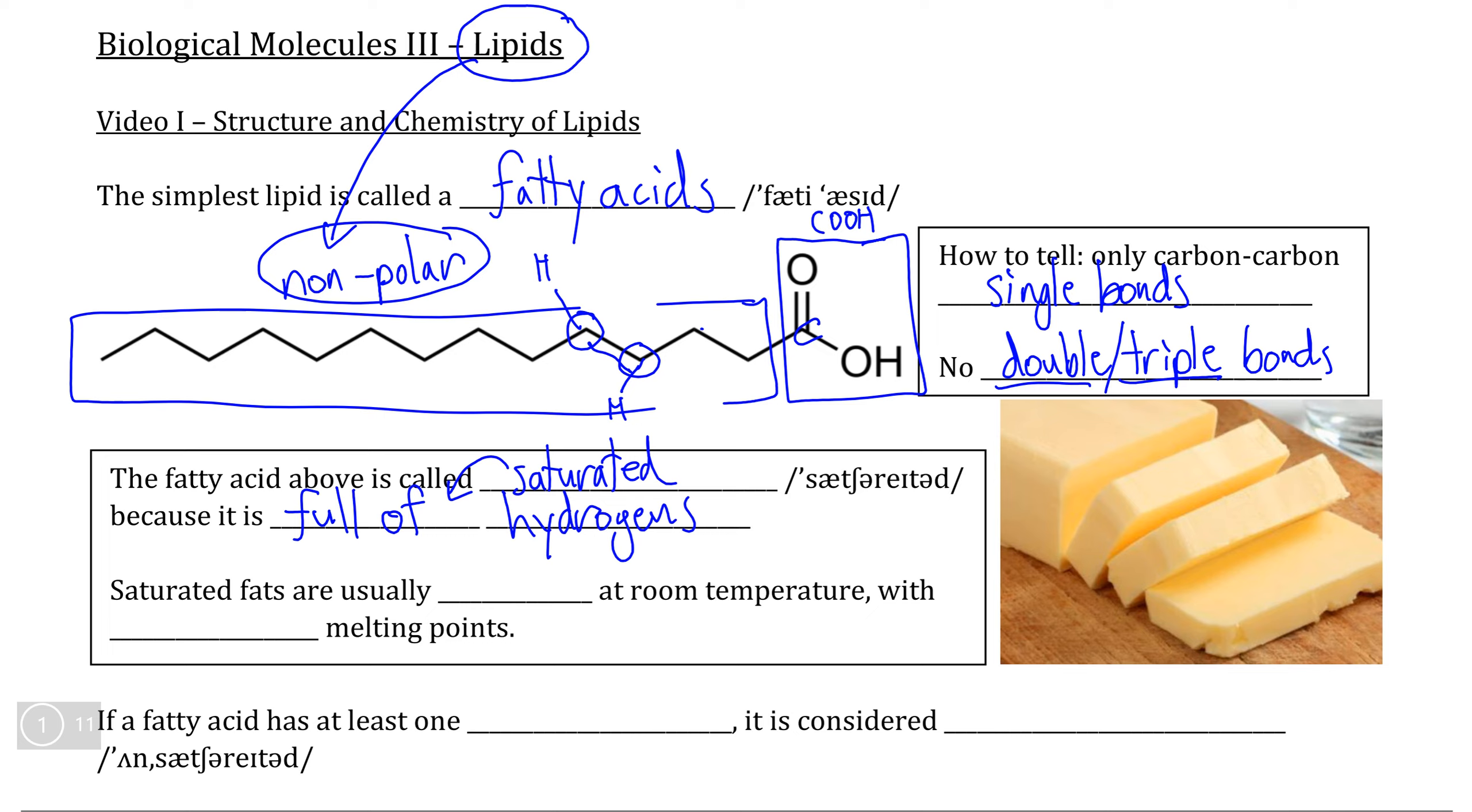Saturated fats are easy to recognize in the food that we eat because they are usually solid at room temperature and have much higher melting points than other lipids that you might eat. So butter is a prime example of a saturated fatty acid, but you can also find saturated fatty acids in animal fat that you'll recognize is solid as well.